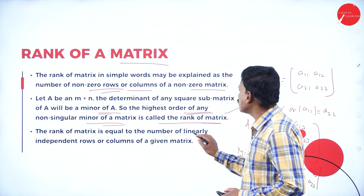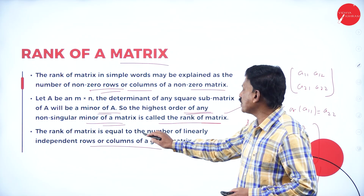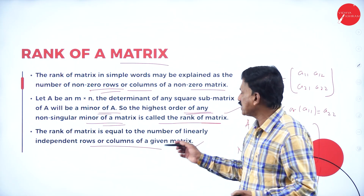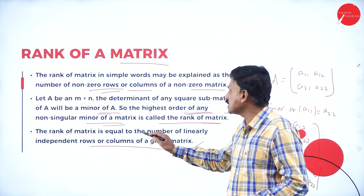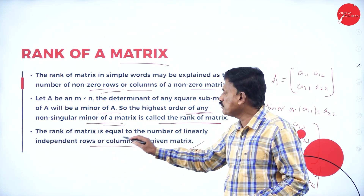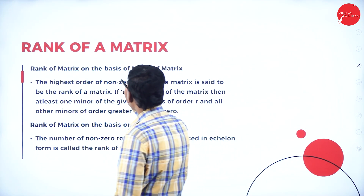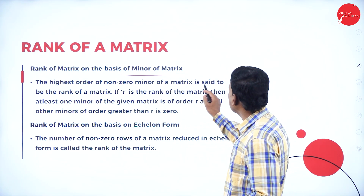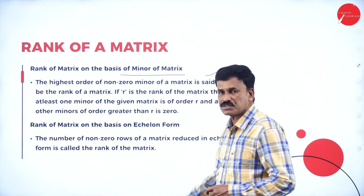The rank of a matrix is equal to the number of linearly independent rows or columns of a given matrix. On the basis of minors, the highest order non-zero minor of a matrix is said to be the rank of the matrix. You can write this as the definition.